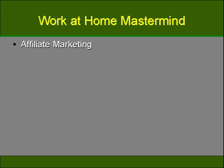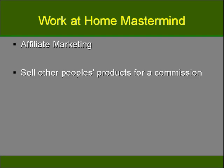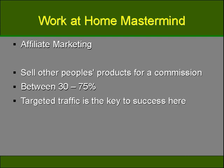Affiliate marketing in a nutshell is that you're marketing for other people. You're given a unique link that goes through to the vendor's website, and when customers go there and buy, you earn a commission. The typical commission runs between 30 and 75 percent, with 50 percent being the average. The key to success is to drive targeted traffic to those pages to get high conversions. There are no web page skills required, and everything is set up for you to start making money. You simply need to keep the traffic targeted.